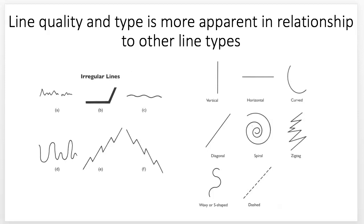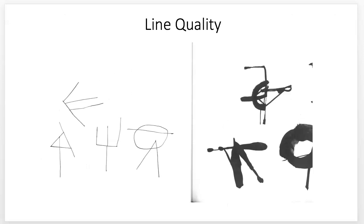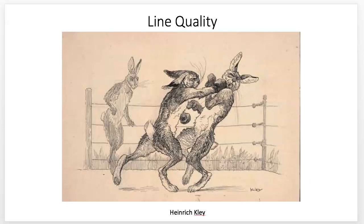What do we mean by line quality? There's more to it than one thing — thickness and thinness, and how lines relate to other things. You can tell a vertical line really well by a horizontal line, or a thick line when there are thin lines next to it. Wavy lines show up really well with straight lines. They contrast each other. Some of it also has to do with the medium you use.